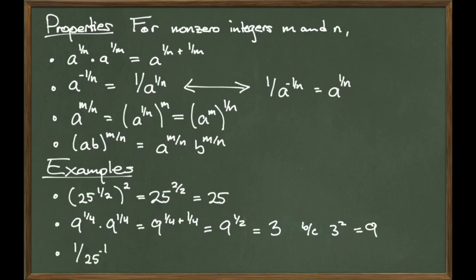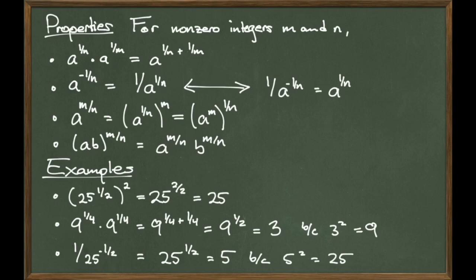Lastly, when considering 1 over 25 to the negative 1-half power, we can use the second property to rewrite the expression as 25 to the 1-half power, which equals 5, because 5 squared is equal to 25, meaning that 5 is the square root of 25.